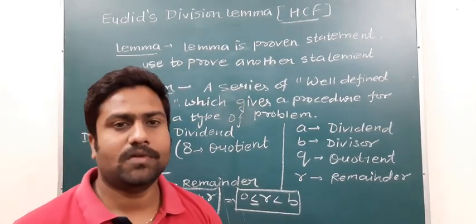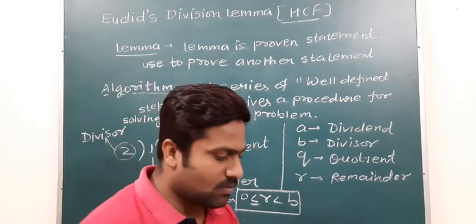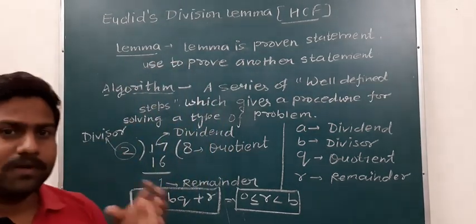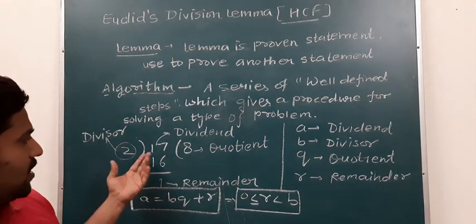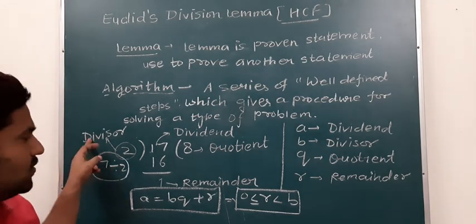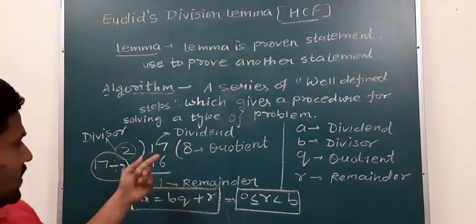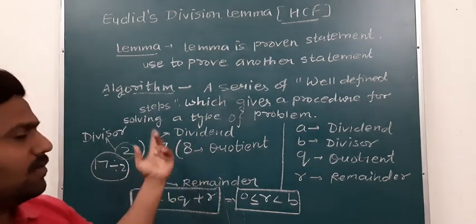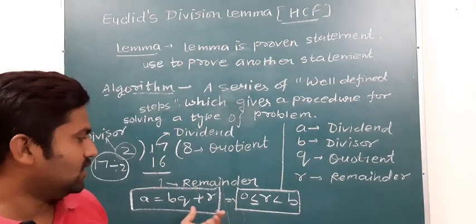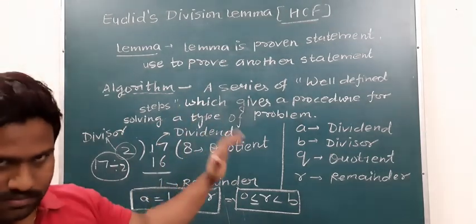We have to find out the HCF of given numbers by using Euclid's Division Algorithm, meaning we will solve it step by step. For example, take 17 divided by 2. Here the divisor is 2 and the number being divided is the dividend. However many times the divisor fits is the quotient, and what remains after completing the division is the remainder.